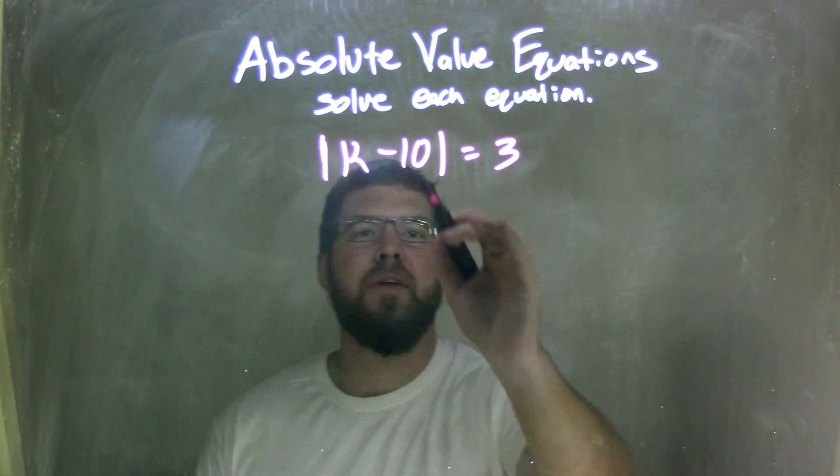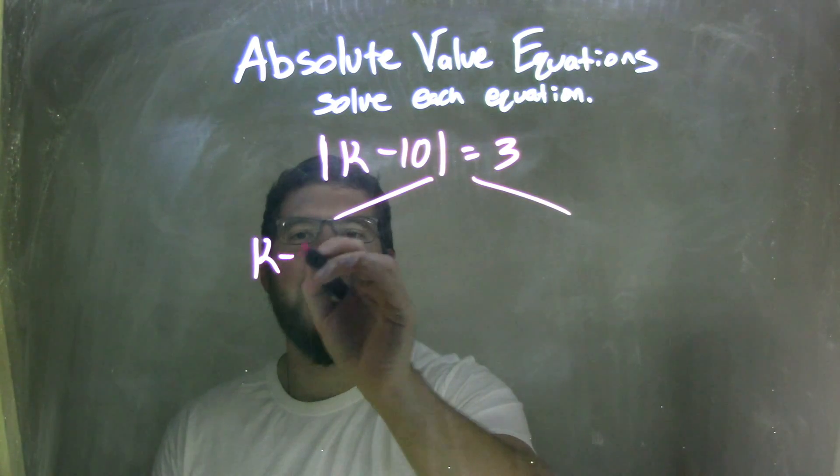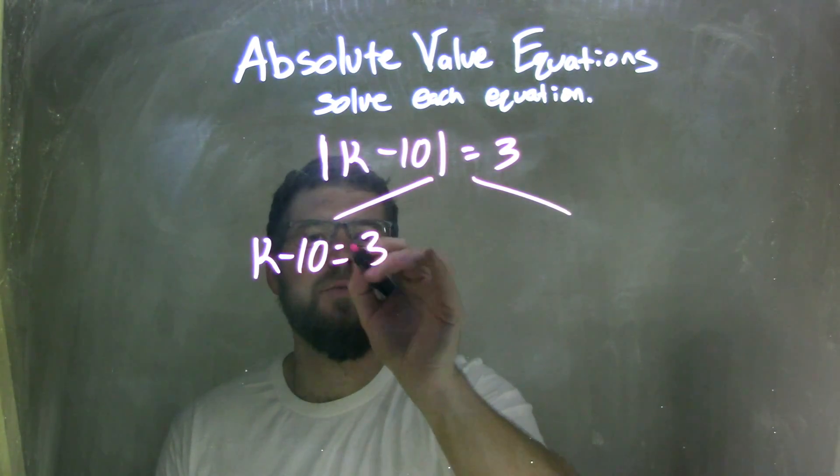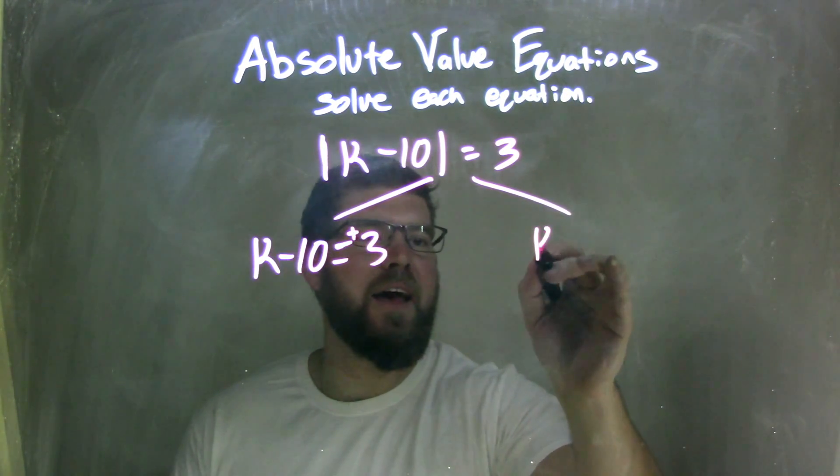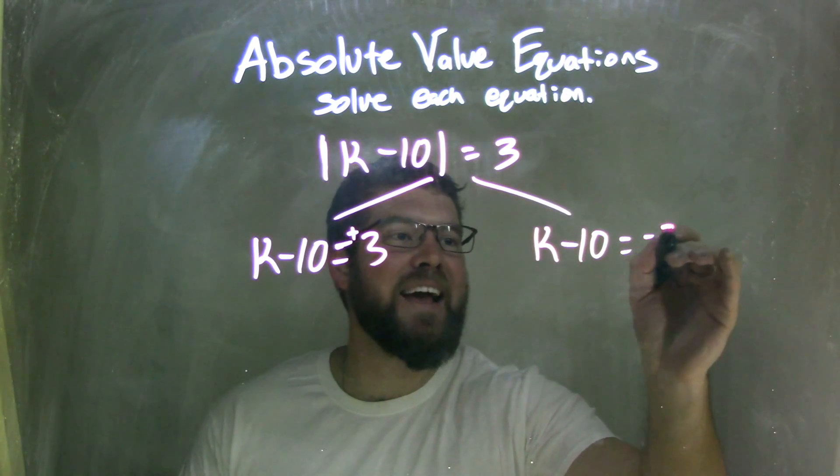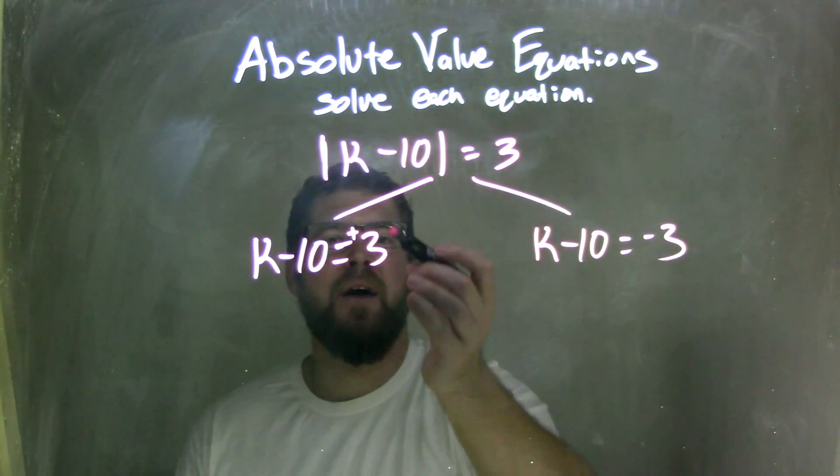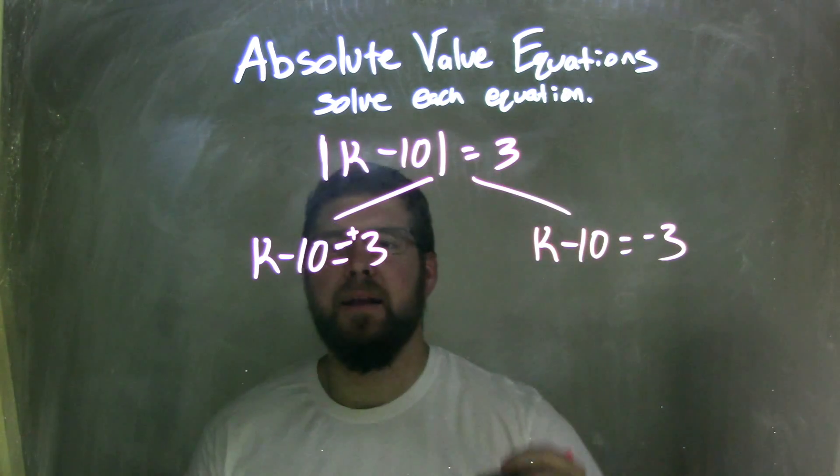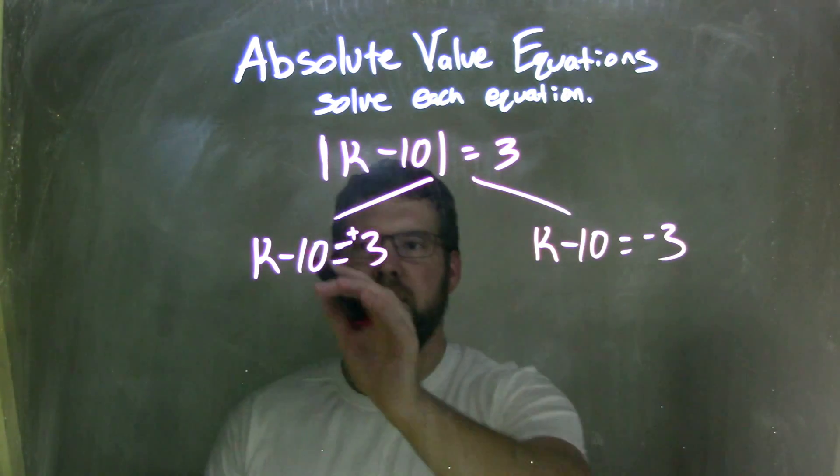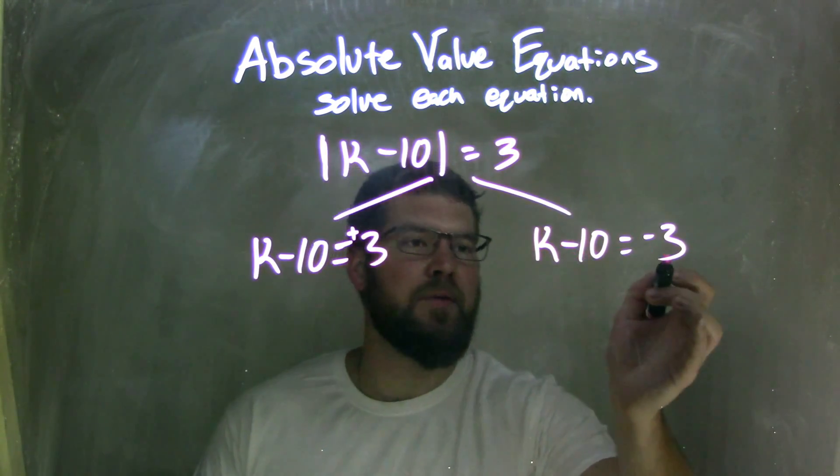So now I can separate this into two equations. k minus 10 equals a positive 3, and k minus 10 equals a negative 3. We separate the absolute value equal to a positive and negative, whatever is on the right here. So k minus 10 equals positive 3, k minus 10 equals negative 3.